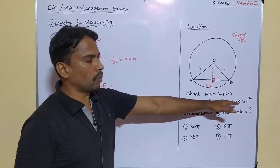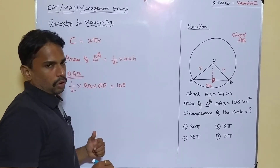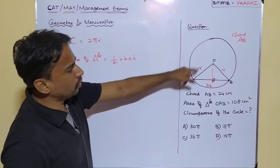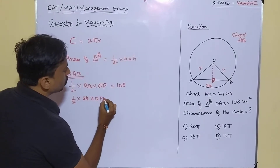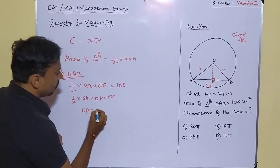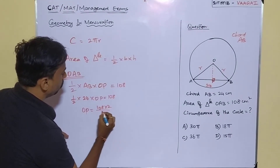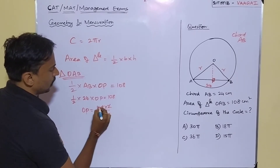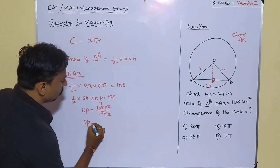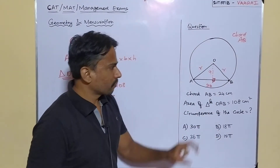Using the area formula: ½ × AB × OP = 108. Substituting AB = 24: ½ × 24 × OP = 108. Solving, OP = 108 × 2 ÷ 24 = 9. So the height OP is equal to 9 centimeters.